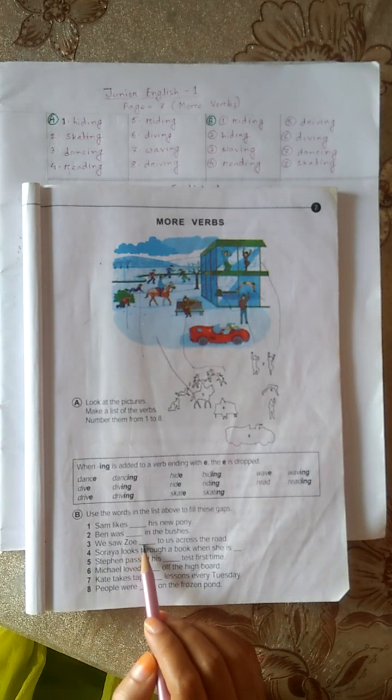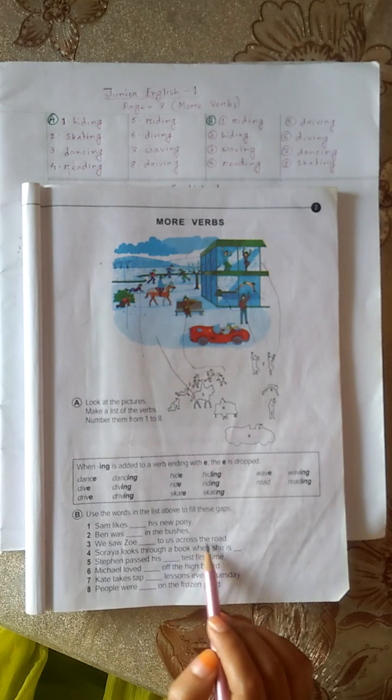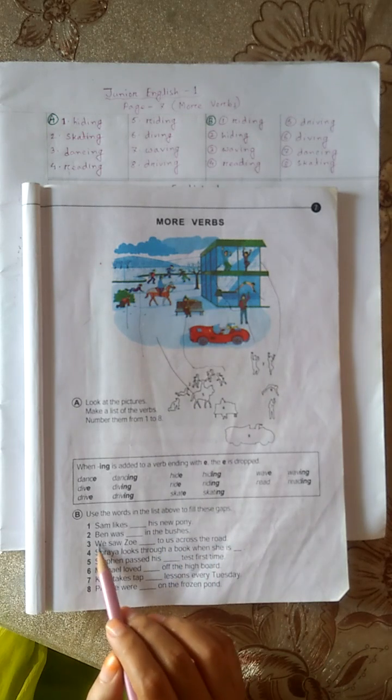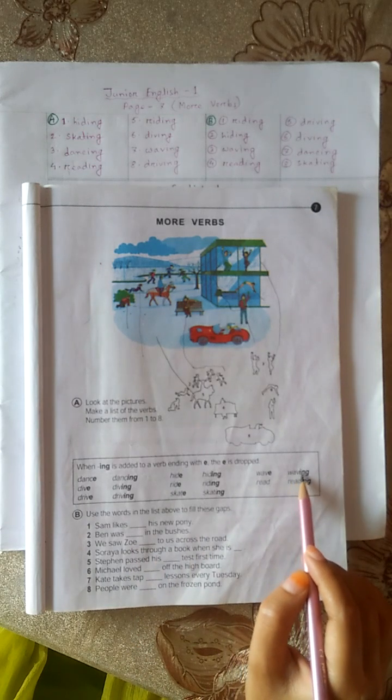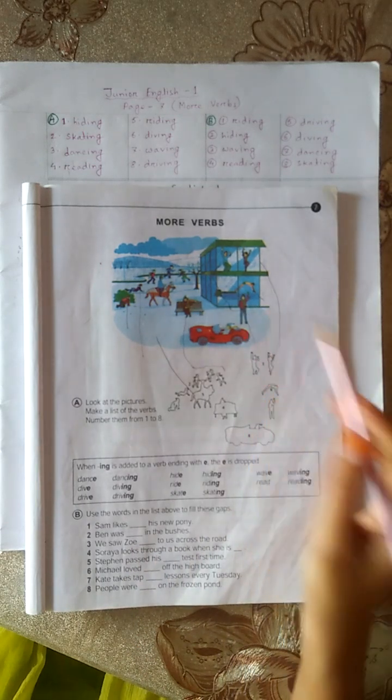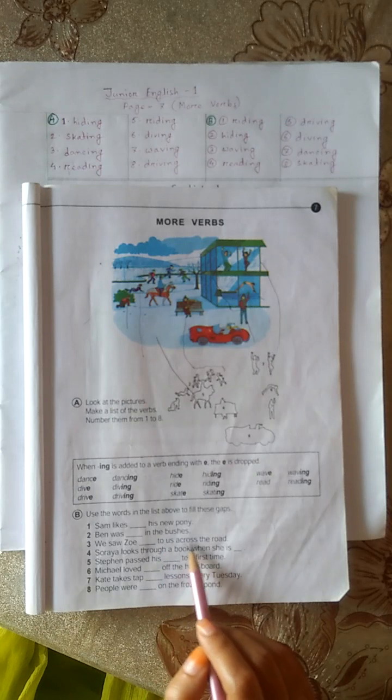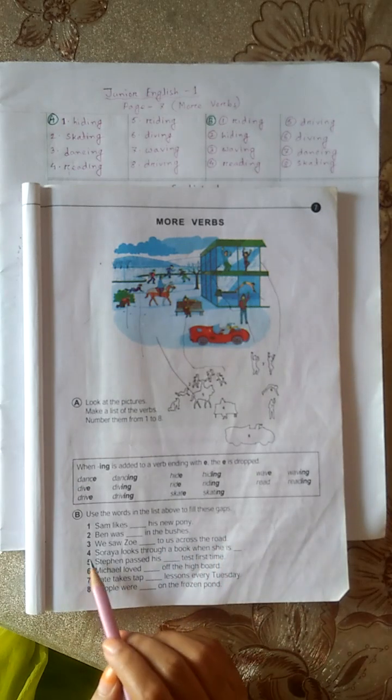We saw Joe dash to us across the road. We saw Joe waving, W-A-V-I-N-G, waving to us across the road.